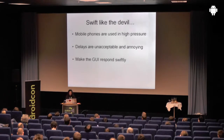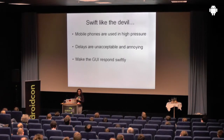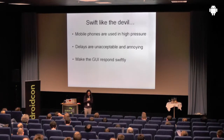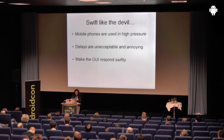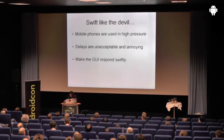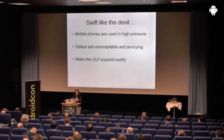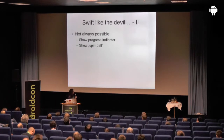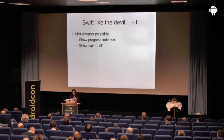The next point: be swift like the devil. Mobile phones tend to be used in high-pressure situations — the girlfriend calls and is hungry. The user is on the train, has one station, wants to play a game. You must make the GUI respond as swiftly as humanly possible. Sometimes due to hardware limitations you can't make it fast enough — in that case, show at least a progress indicator or a spin ball.